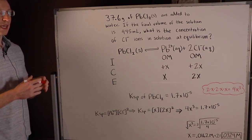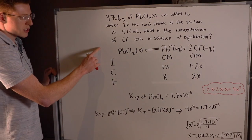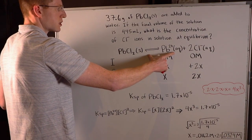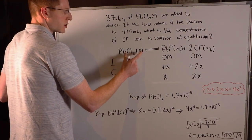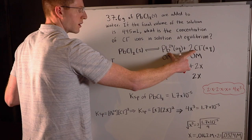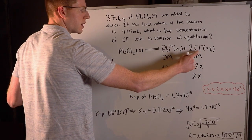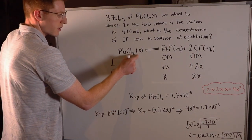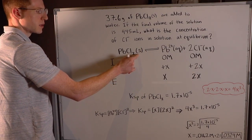Whenever you're doing a KSP problem or a solubility precipitation problem like this, the first thing I always like to do is make an ICE table. The ICE table is going to be for our solubility reaction. The solubility reaction is solid lead chloride in equilibrium with its dissociated ions — lead and chloride. There are two chloride ions, both in the aqueous state because they're dissolved in water. Notice there's nothing written under our reactant PbCl₂ because it is a pure solid.